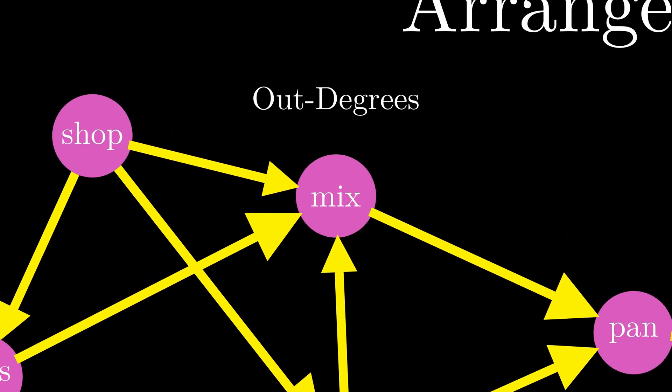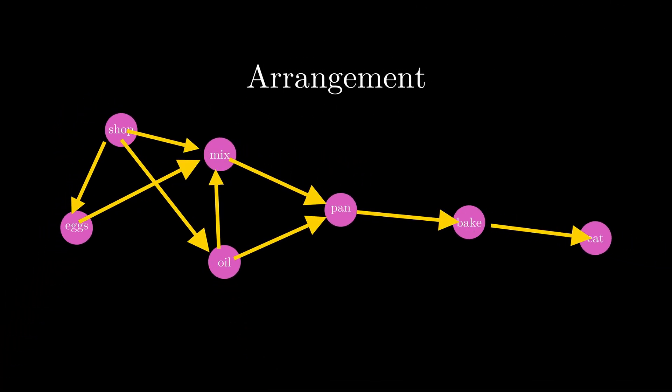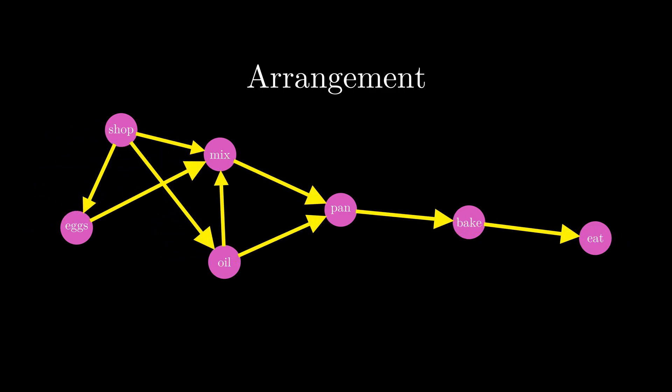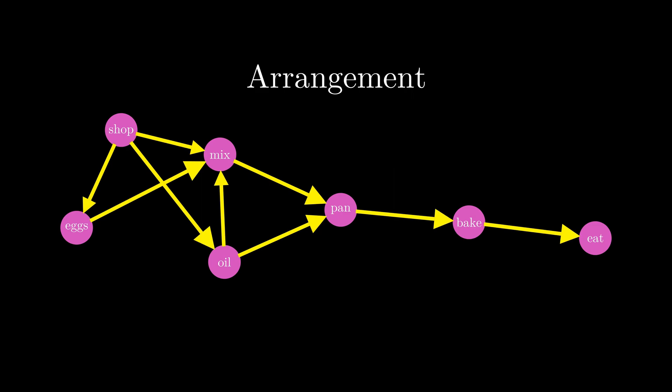And in contrast, out degrees is just the number of edges going from the node. So this mixed node has one out degree. So this arrangement of tasks and how they are connected to one another is the topology of the overall goal of baking and then eating a cake. And we can understand the topology of the graph by looking at the directed edges of the graph because they represent the dependencies of each node or task.